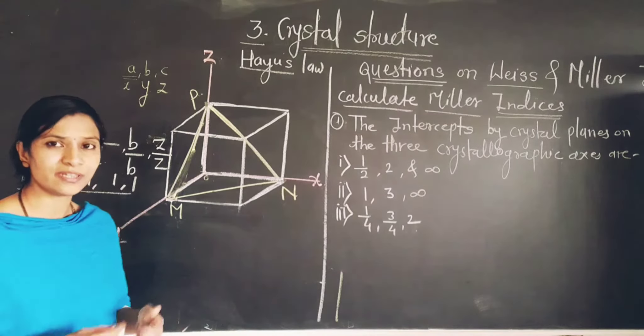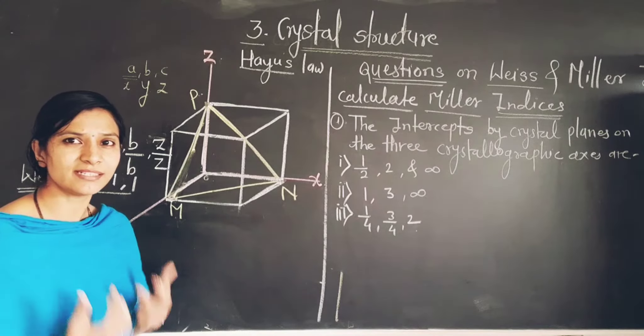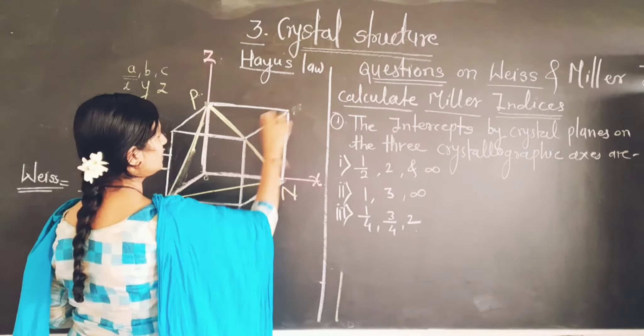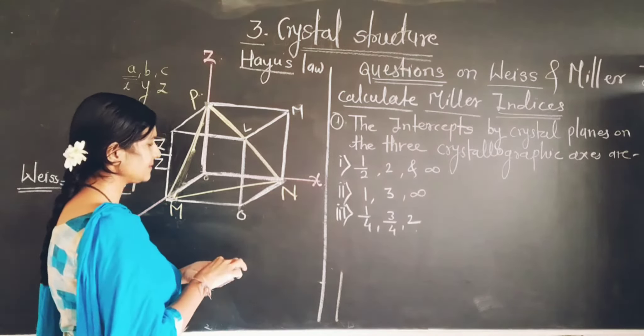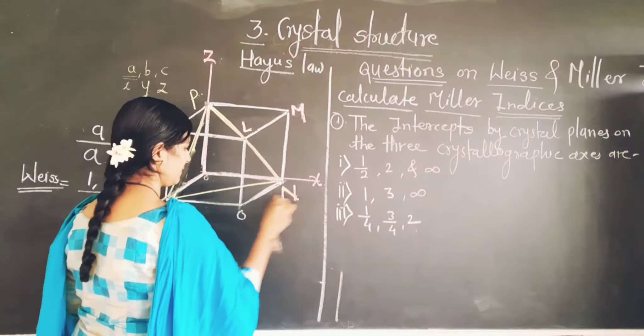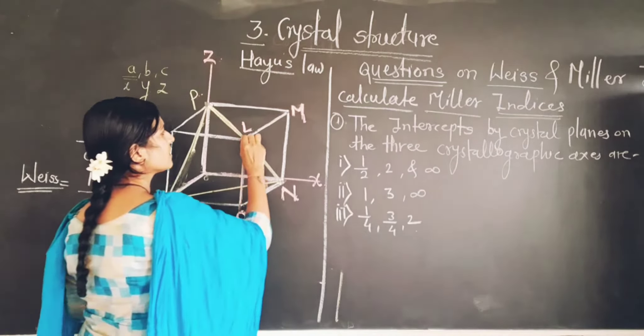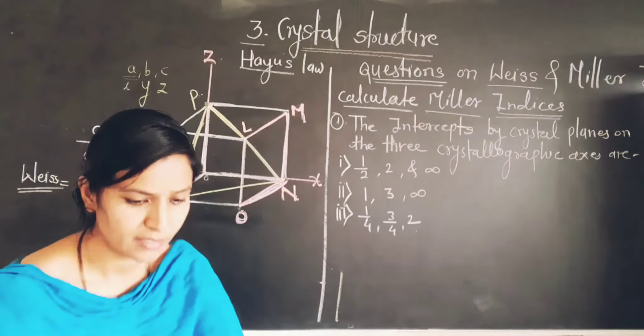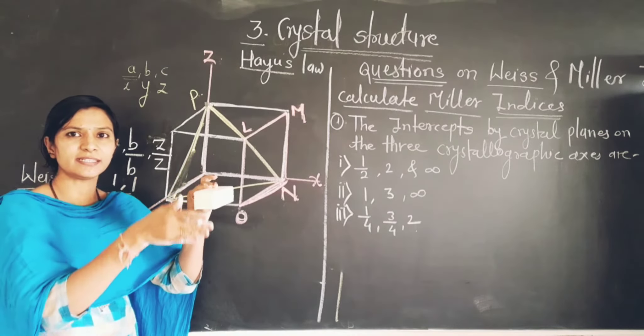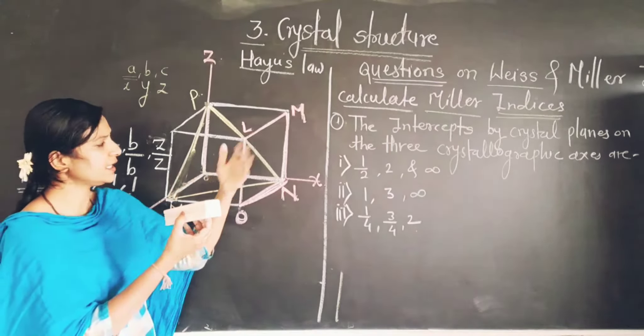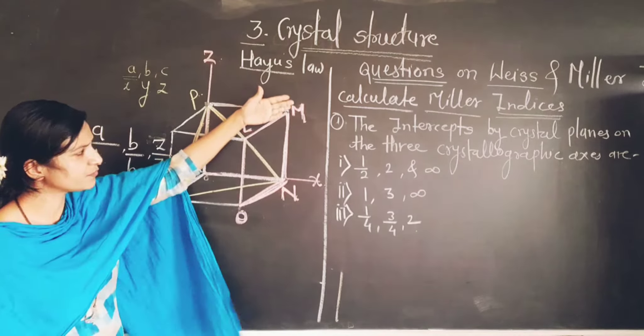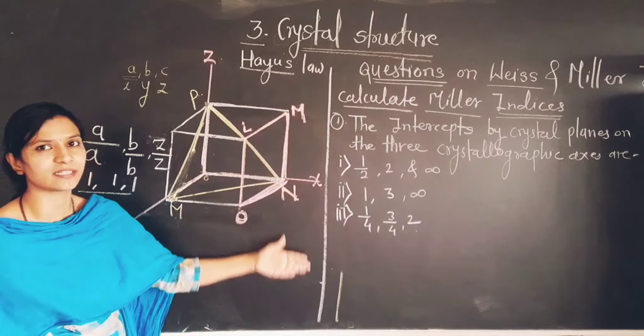Now we take another plane only for understanding purposes. Suppose that is L, M, N, O. It is another plane I have just passed through the crystal. Consider this is the crystal, and I have passed one plane through this side. And this diagram is nothing but the coordinate view of such a type of crystal system.